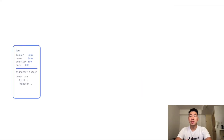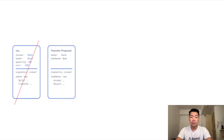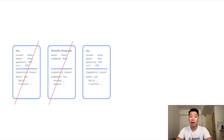Let's look at a step-by-step diagram of this flow. We start with an IOU contract where the issuer and owner are both the banker, with two choices: split and transfer. In the second step, the bank transfers the IOU — the original contract is archived and a new transfer proposal contract is created with Bob as the new owner. Bob can then choose to accept or reject. Once he accepts, the IOU transfer proposal contract is archived and a new IOU contract is generated with Bob as the new owner.